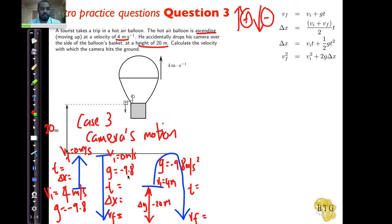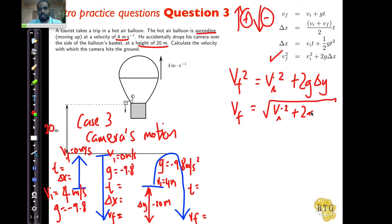Calculate the velocity with which the camera hits the ground. We want the final. What don't we have? We don't have time. Is there a formula without time? Yes, the last one has no time involved. Let's put it in: vf squared equals vi squared plus 2g delta y. We've got delta y, we've got g, we want vf, so vf equals the square root of vi squared plus 2g delta y.